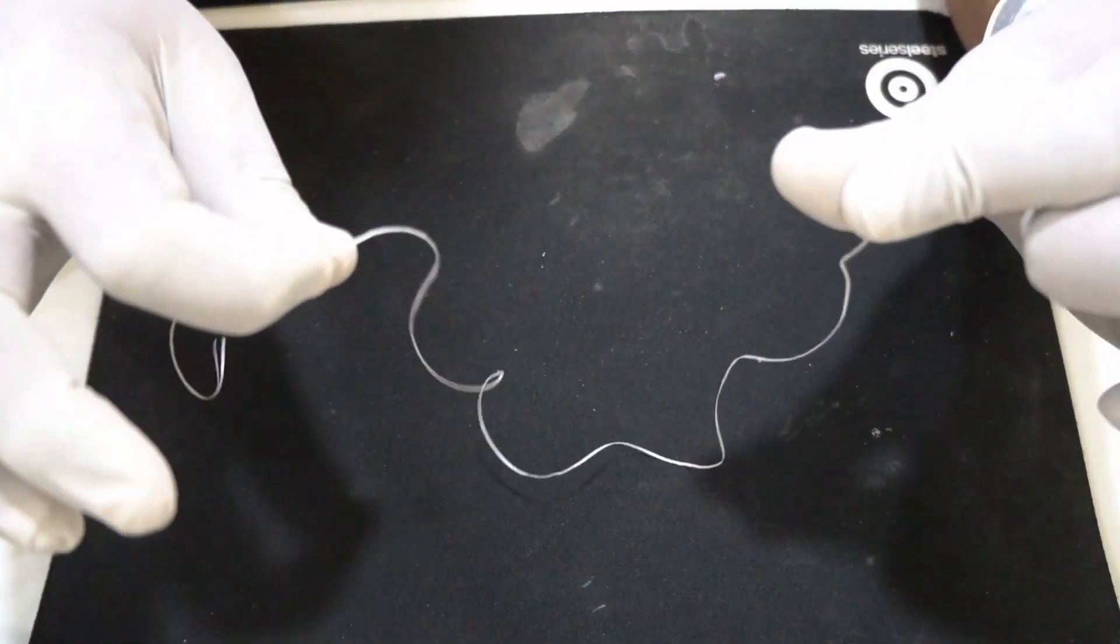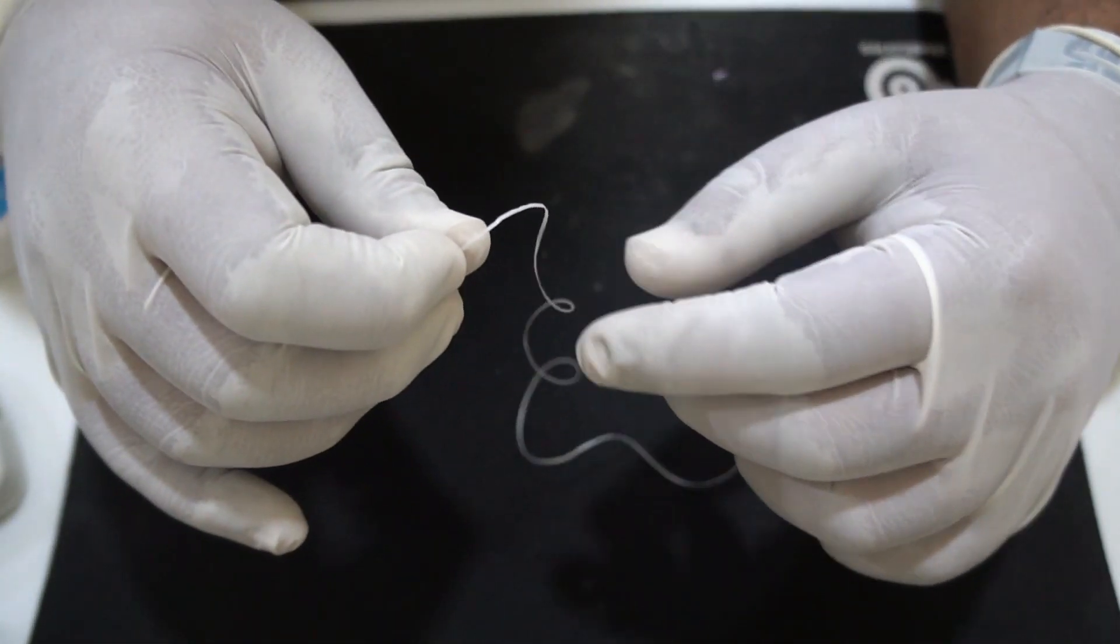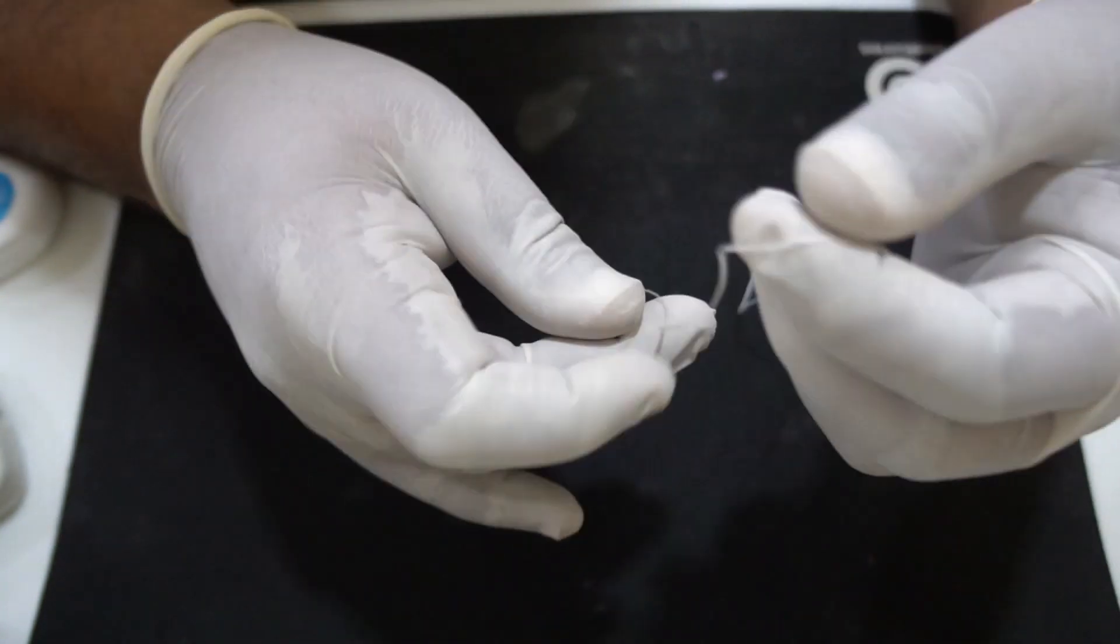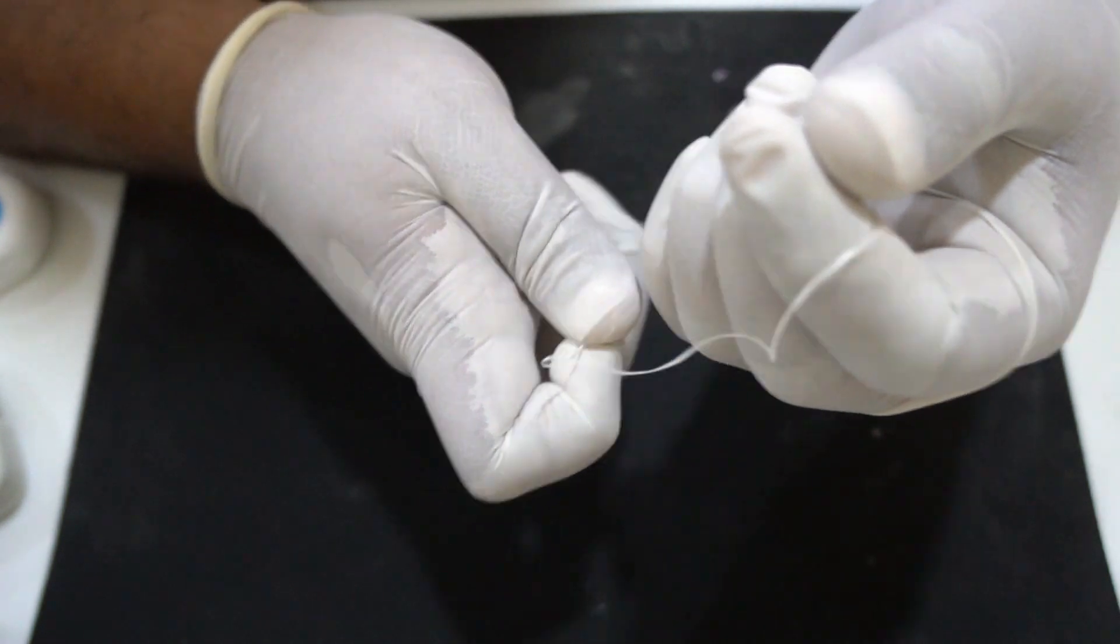So to make a floss ligature, take about a 15 to 20 cm stretch of floss. The brand of floss doesn't matter. Choose whichever one you are comfortable with. Stretch it between your right hand and left hand, like so.